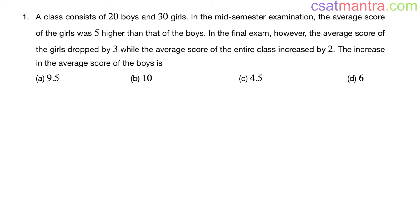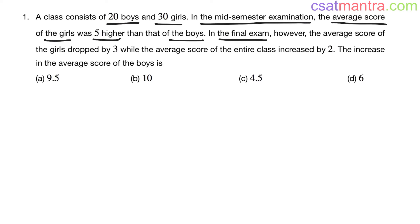Let's solve a question based on the averages concept. A class consists of 20 boys and 30 girls. In the mid-semester examination, the average score of the girls was 5 higher than that of the boys. In the final exam, however, the average score of the girls dropped by 3, while the average score of the entire class increased by 2.